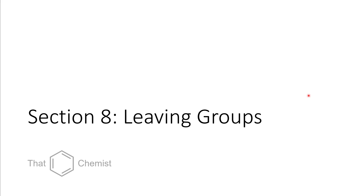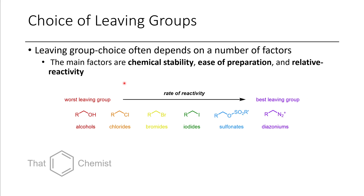Now for today's subject matter: leaving groups. There's generally a spectrum of leaving groups at our disposal when we want to do chemistry. When choosing a leaving group, you definitely want to consider a number of factors. How stable is the leaving group? If you're doing actual synthetic chemistry on the bench, are you preparing the leaving group in situ and immediately doing a reaction, or are you trying to make a bottle of it to leave for a year or two? The other consideration is relative reactivity — if you're reacting electrophiles with very poor nucleophiles, you'll need a very reactive electrophile, otherwise the reaction could be very slow and sluggish.